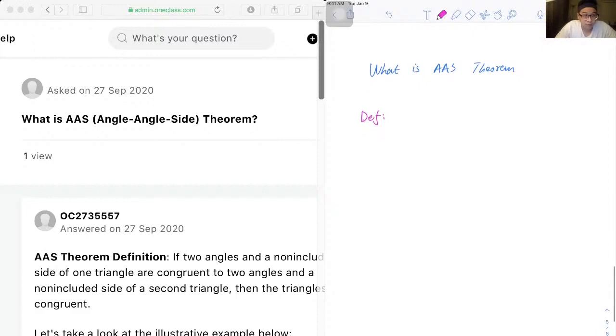AAS Theorem Definition: If two angles and a non-included side of one triangle are congruent to two angles and a non-included side of a second triangle, then the two triangles are congruent. So let's write down the keywords.